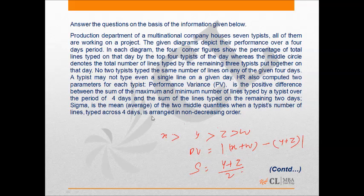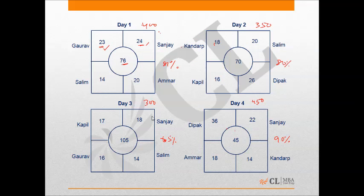The department houses seven typists, all working on a project. The given diagram depicts their performance over a period of four days. In each diagram, the four corner figures show the percentage of total lines typed on that day by the top four typists of the day, whereas the middle circle denotes the total number of lines typed by the remaining three typists put together on that day.